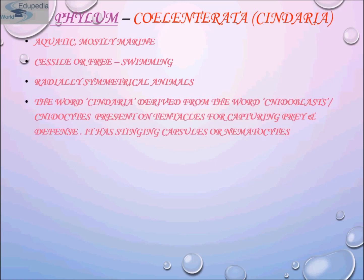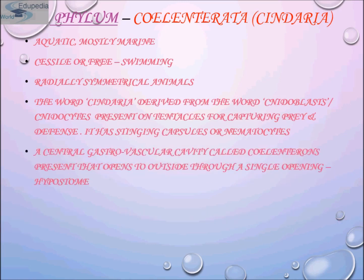Cnidarians are united based on the presumption that their nematocysts have been inherited from a single common ancestor. The name Cnidaria comes from a Greek word 'knide' which means a stinging nettle. Casually touching many cnidarians will make it clear how they got their name, when their nematocysts eject barbed threads tipped with poisons. Many thousands of cnidarian species live in the world's oceans, from the tropics to the poles, from the surface to the bottom.